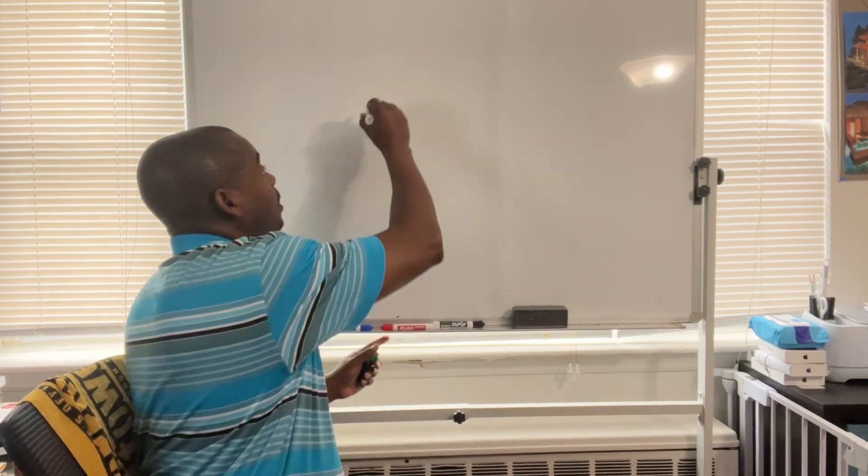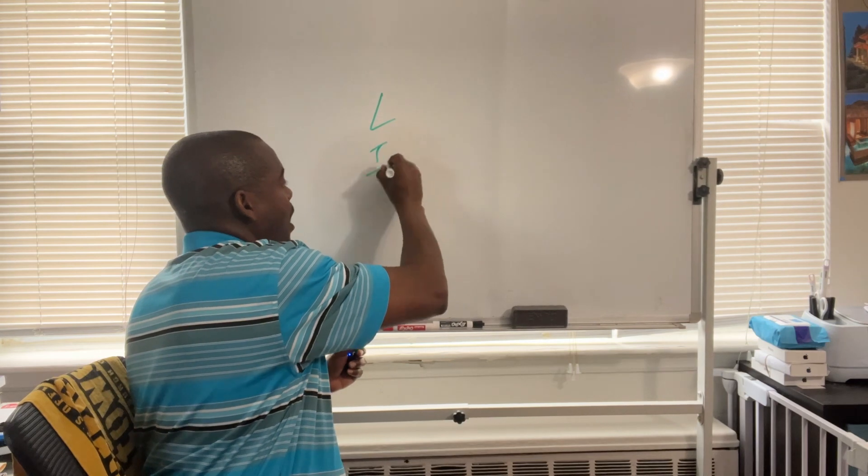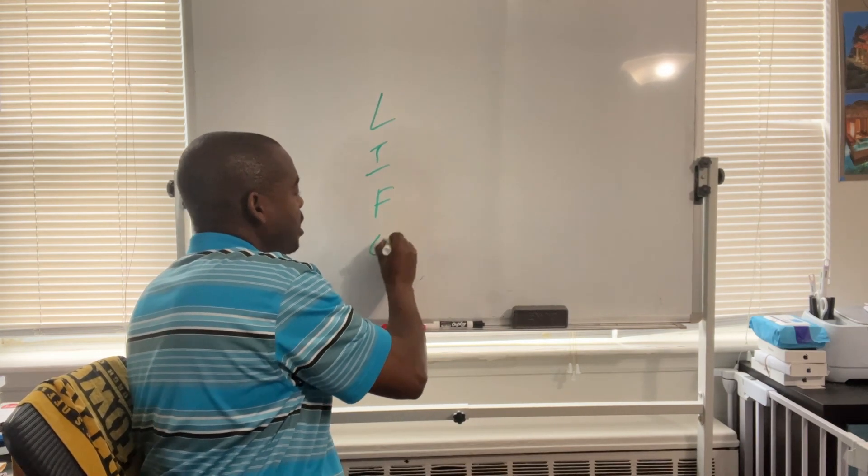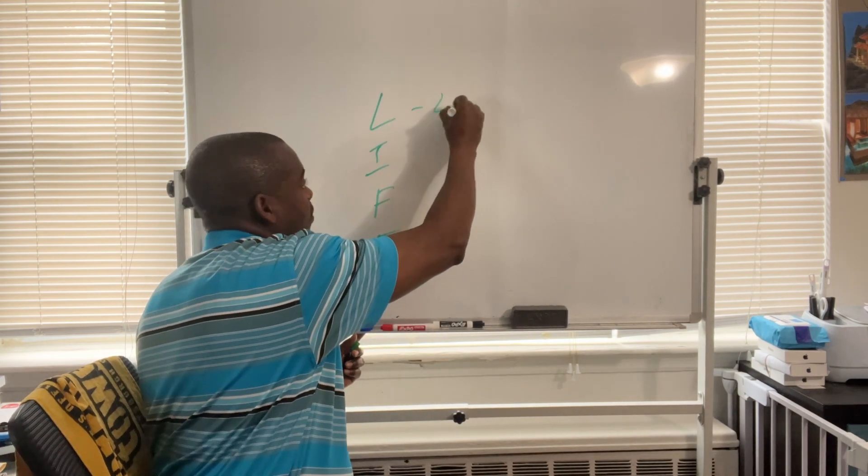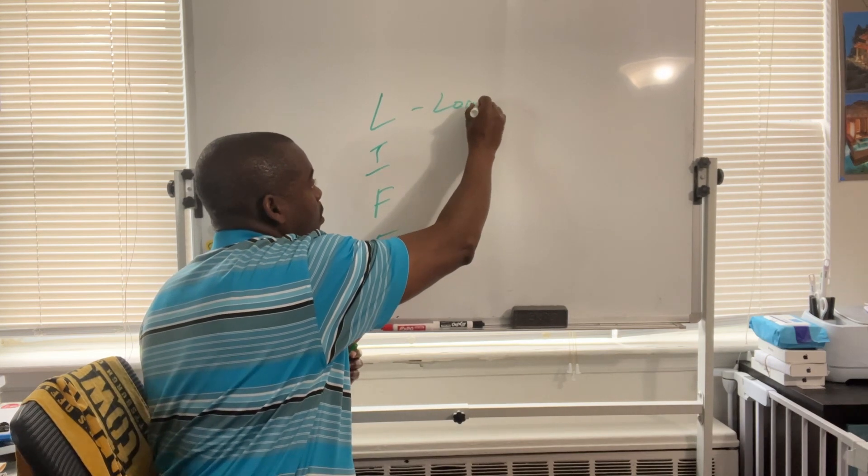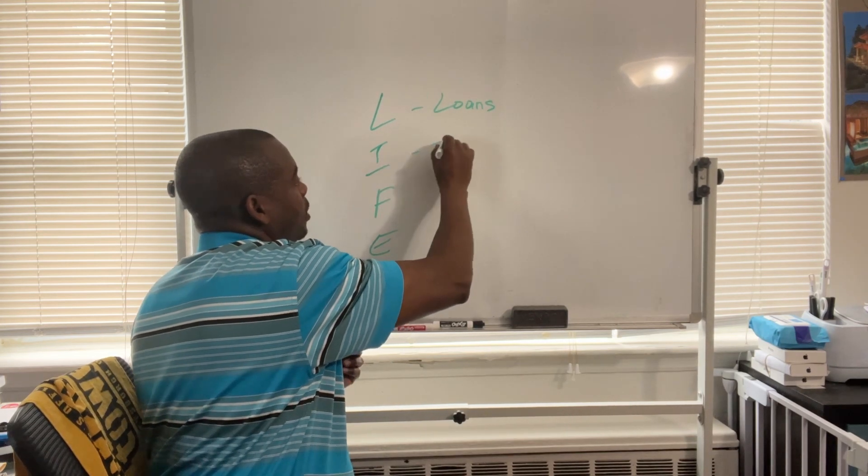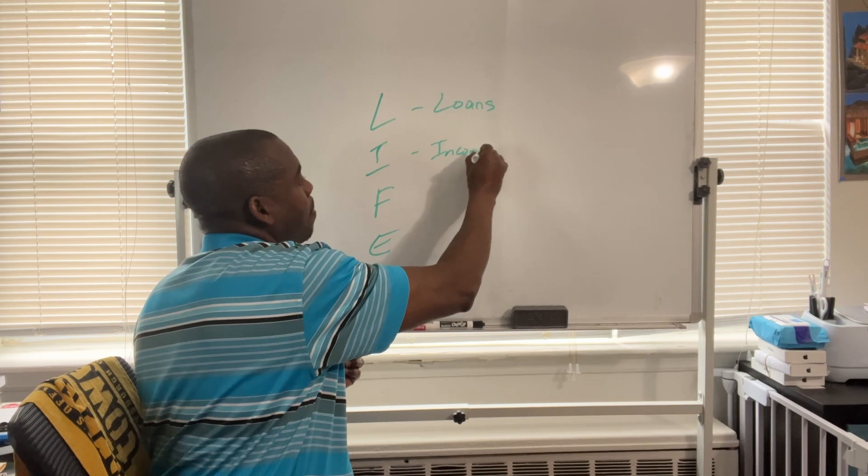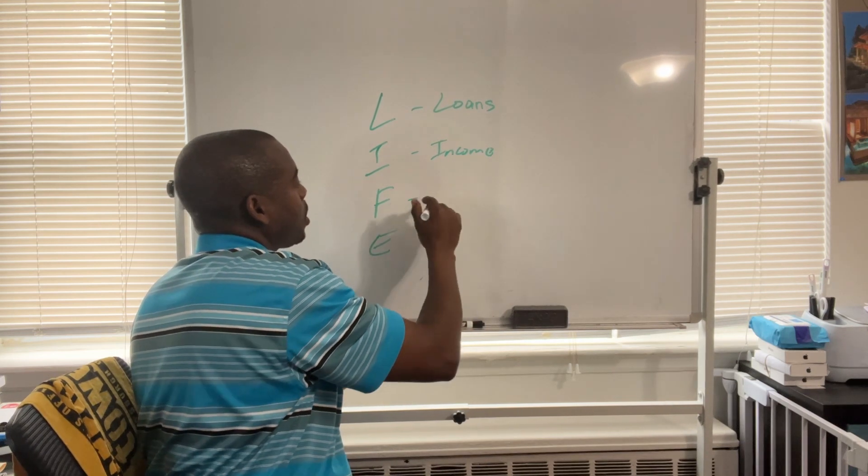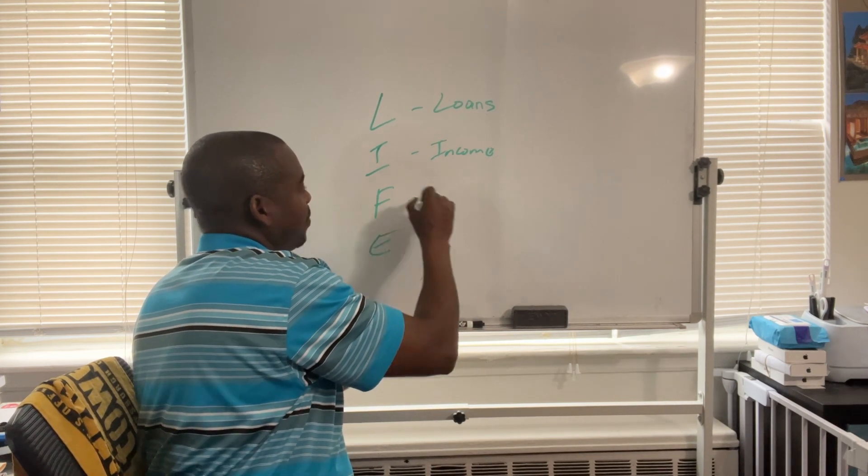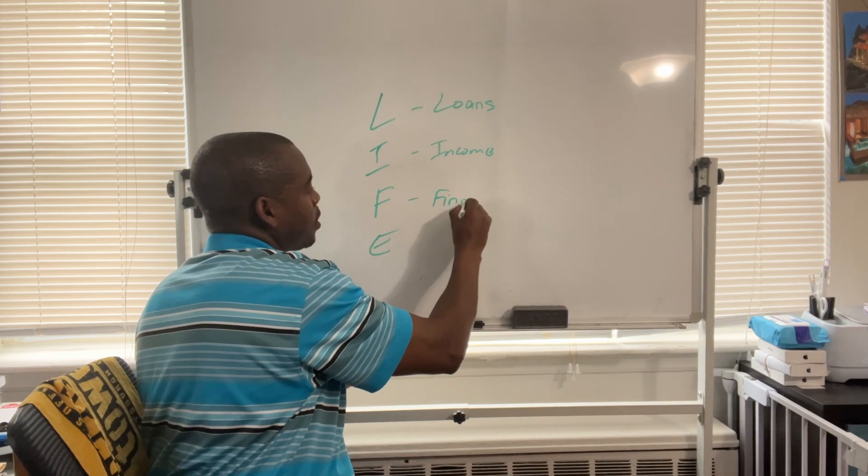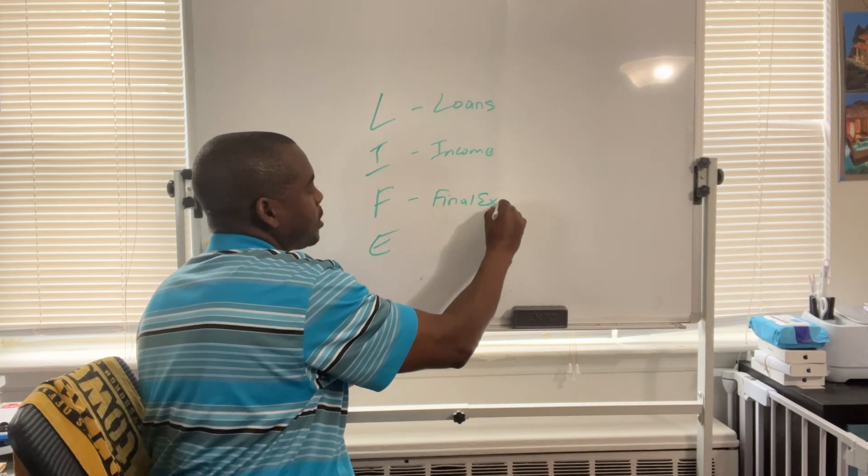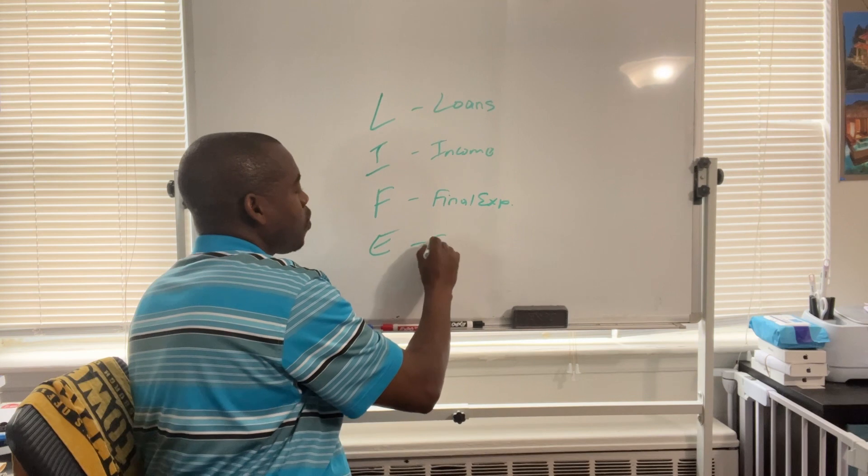With one of the two methods that I've used, and this method that I'm going to show you is called the LIFE method. L-I-F-E, the LIFE method. L stands for loans, I is for income, F is for final expenses, E is for education.